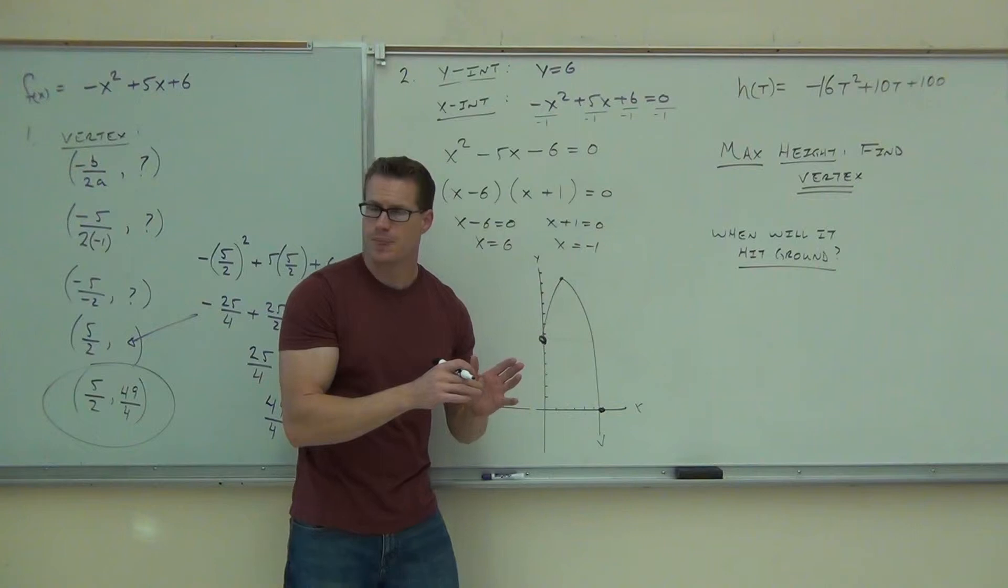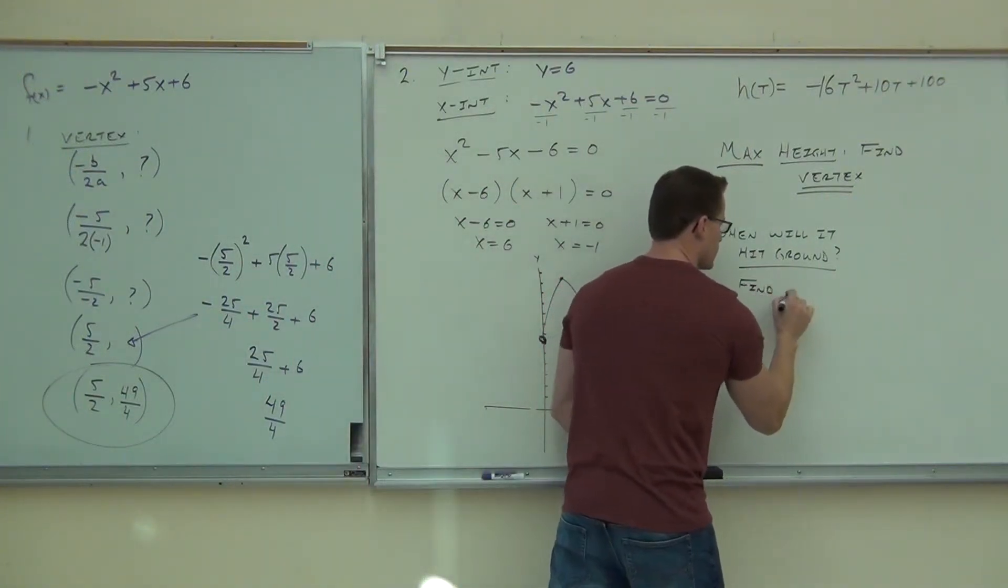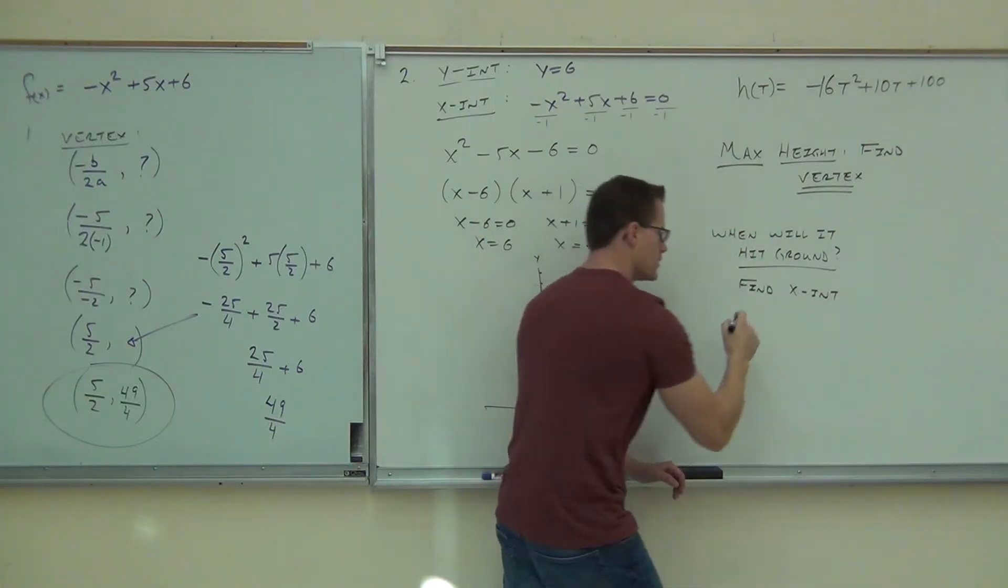That's going to be the time at which you hit the ground. So, find X intercept. That means you set it equal to zero and solve.